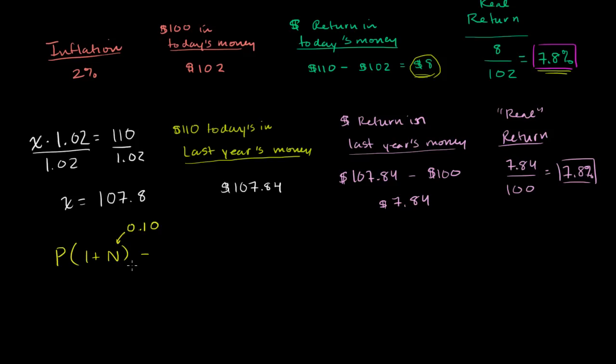And then from that, you want to subtract how much we invested in today's dollars. Well, we originally invested P dollars a year ago, and in today's dollars, we just need to grow it by the rate of inflation. And in the examples we've been doing, we assumed that the rate of inflation is 2%, so that would be 0.02.